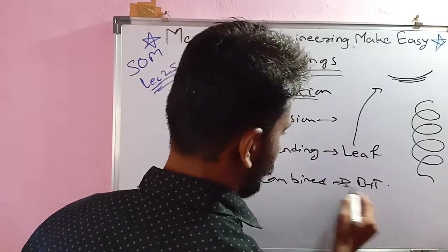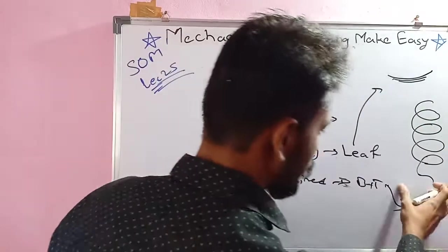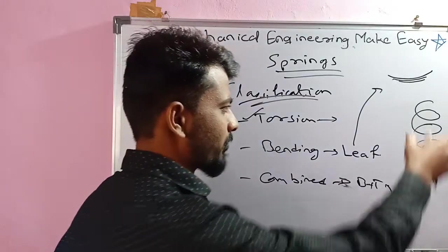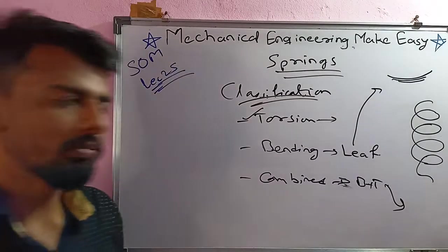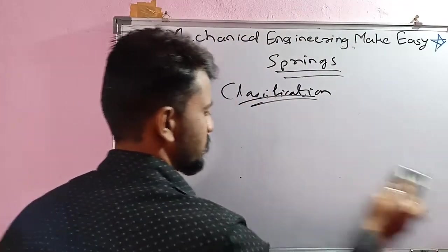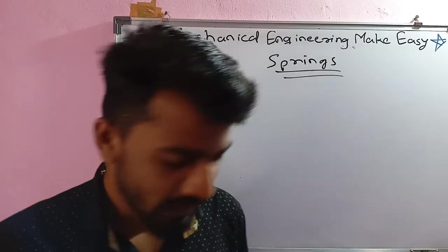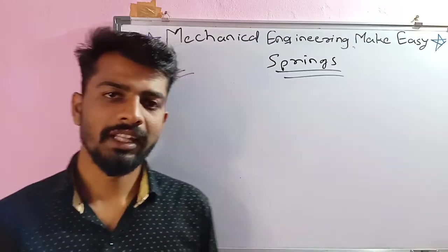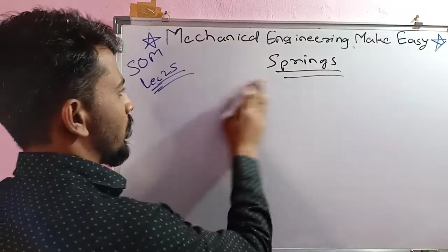For the combined bending plus torsion case, there is the open coil helical spring — again a helical spring but open coil. So to summarize: if there is bending, it's a leaf spring; if there is torsion, it's a close coiled helical spring; and if there is combined bending and torsion, the spring is an open coil helical spring.